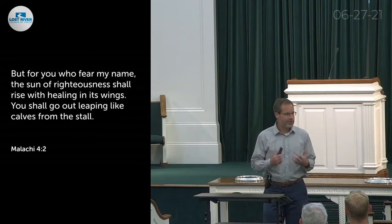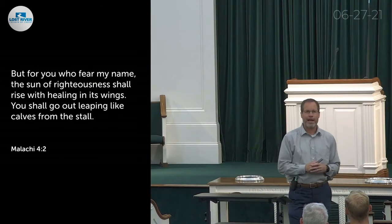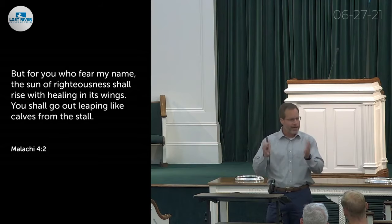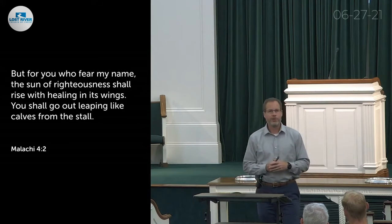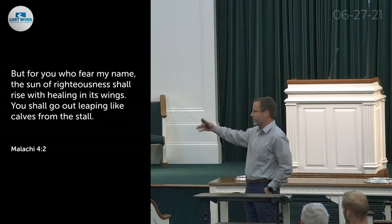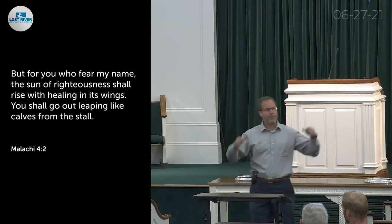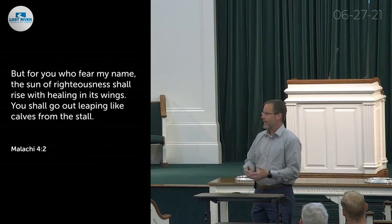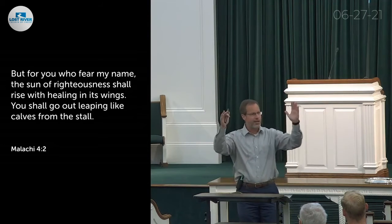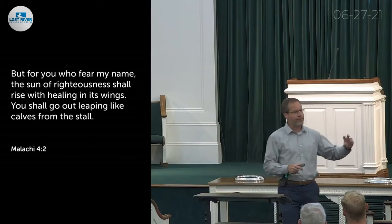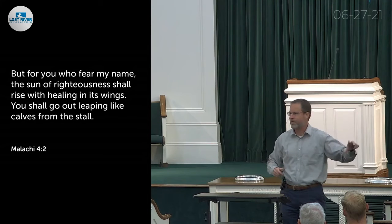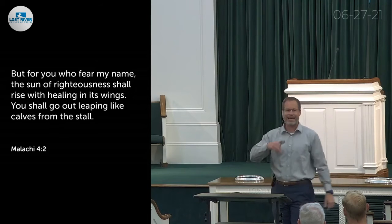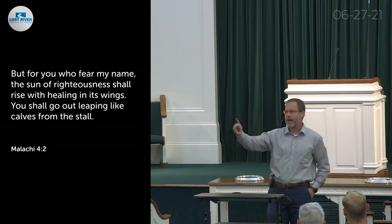Notice how Malachi chapter 4 — the final chapter of the Old Testament — describes this. He tells the righteous: 'But for you who fear my name, the Sun of Righteousness will rise with healing in its wings. And you shall go out leaping like calves from the stall.' This goes on to describe the coming of the new covenant — likely a play on words, with the Sun of Righteousness being a reference to Christ Himself.